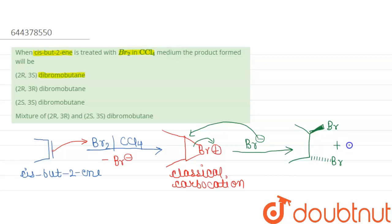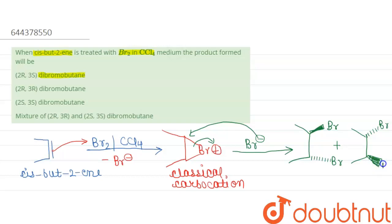So Br⁻ can attack from the wedge side or the dash side. In one product, bromine is on the dash; in the other product, bromine is on the wedge. These are the two products formed during the reaction with CCl₄.